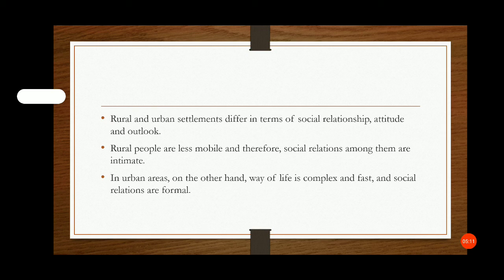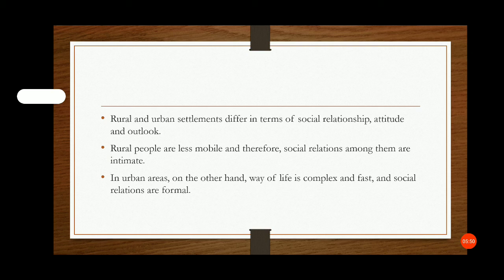Rural and urban settlements also differ in terms of social relationships, attitude, and outlook. Rural people are less mobile and therefore social relations among them are intimate. In urban areas, on the other hand, the way of life is complex and social relations are formal.